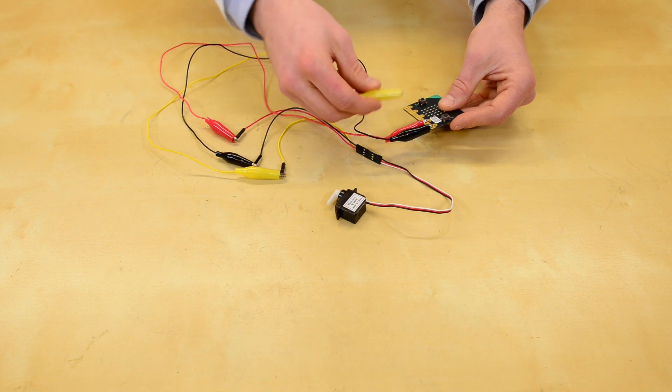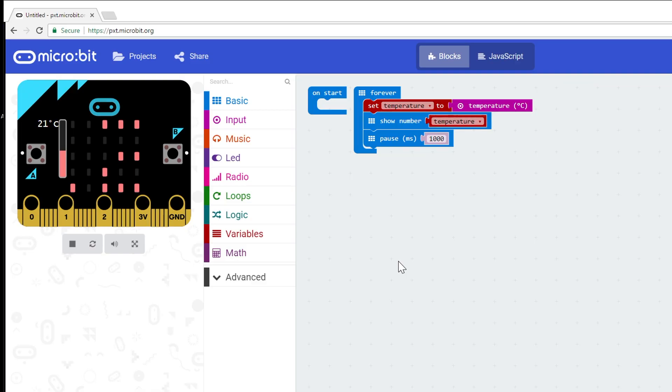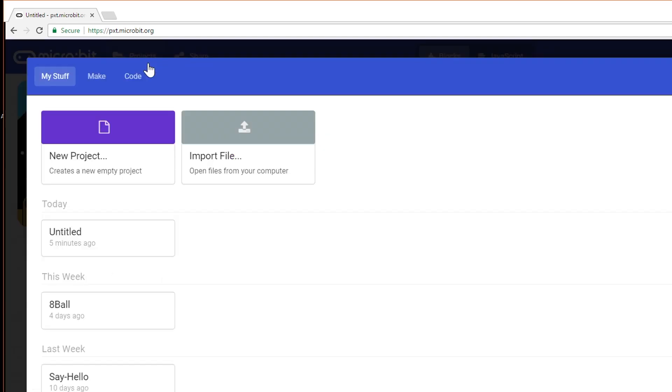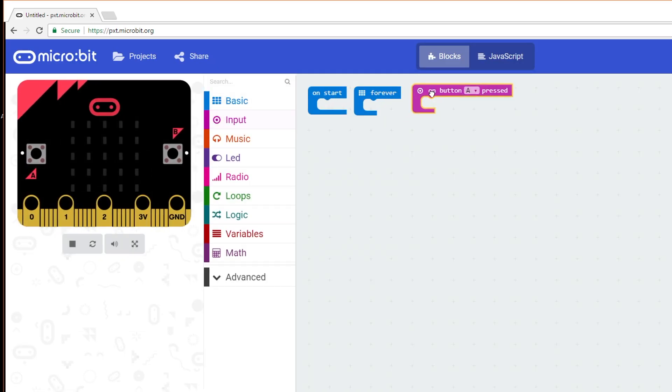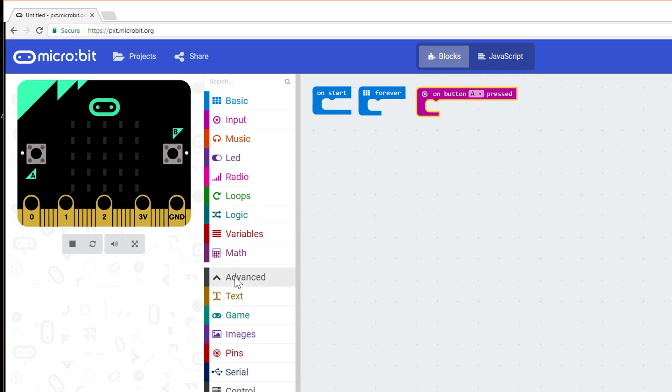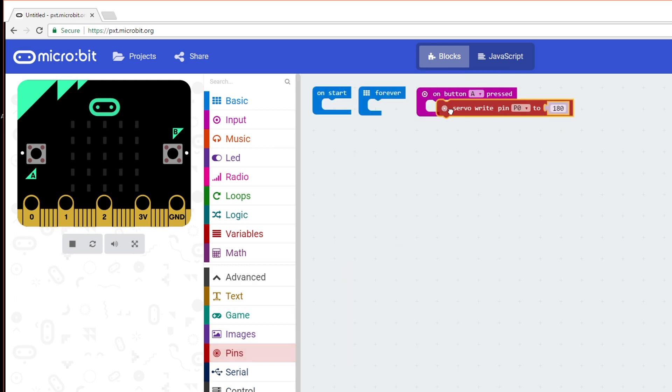Let's test the servo. We'll have it move to different positions when we press the buttons. Back in MakeCode, start a new project. Drag OnButtonAPressed from input to the project. Click on Advanced and go into Pins. Snap ServoRightPin to the OnButtonPressed block.